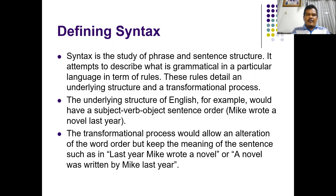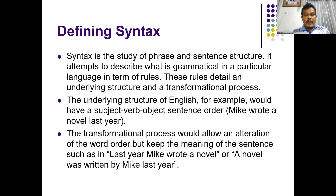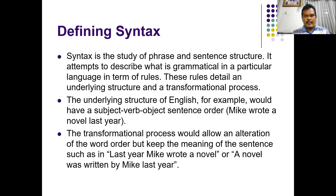The underlying structure of an English sentence, for example, is subject-verb-object order. One example is 'Mike wrote a novel last year.' You can see that this sentence is composed of Mike as the subject, wrote as the verb, a novel as the object, and last year as the adverb of time. This is the underlying or basic structure of any sentence in English.